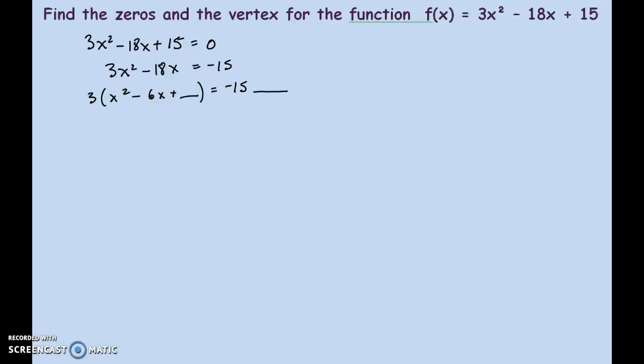What's the term that's going to go in that blank? Well, you're going to be dividing the negative six by two and then squaring it to get that third value. So, half of six squared is nine. So, we'll be adding nine to that side.